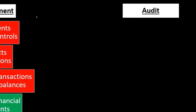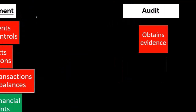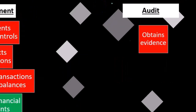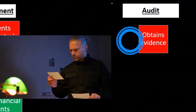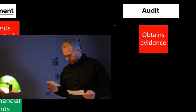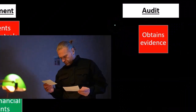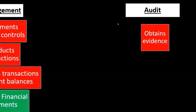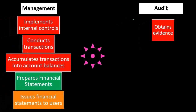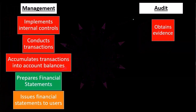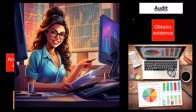Have the statements been put together in accordance with a set of rules? That's what the audit is designed to do. Those rules are oftentimes generally accepted accounting principles in a US audit. We're going to obtain evidence, and that's how we're going to determine this. The end goal is: are these financial statements represented correctly in accordance with generally accepted accounting principles?